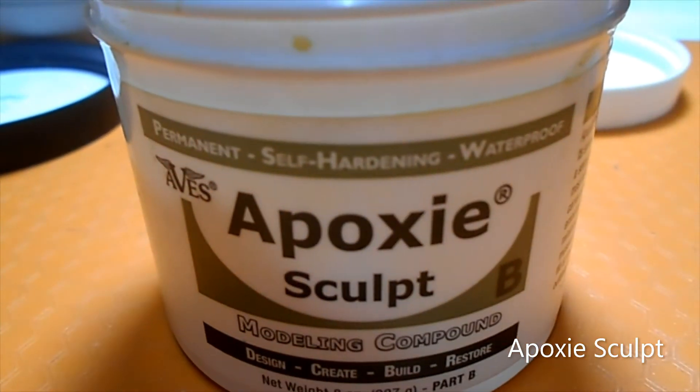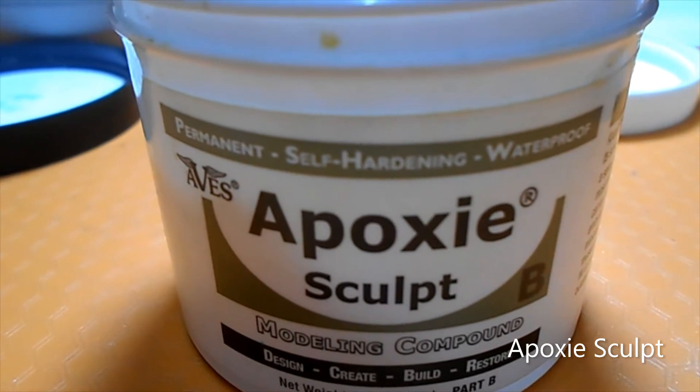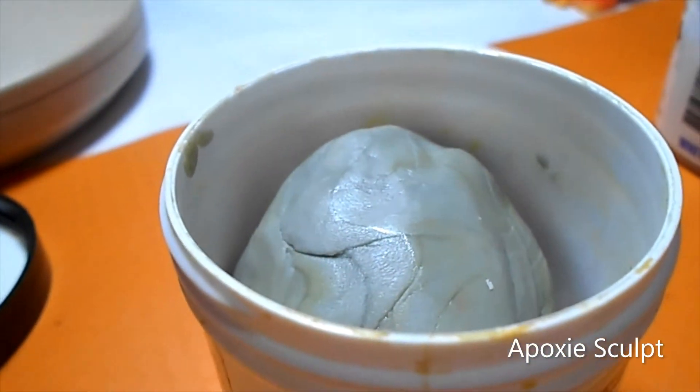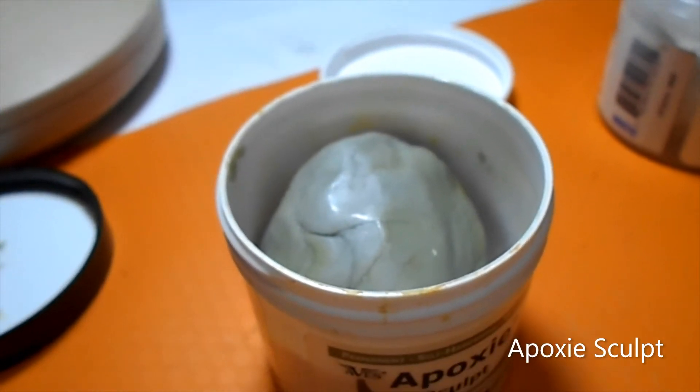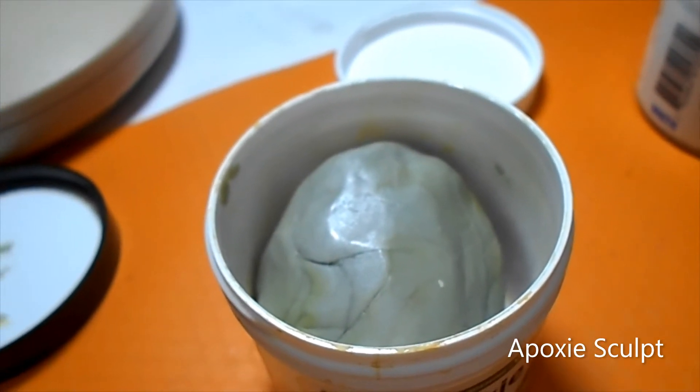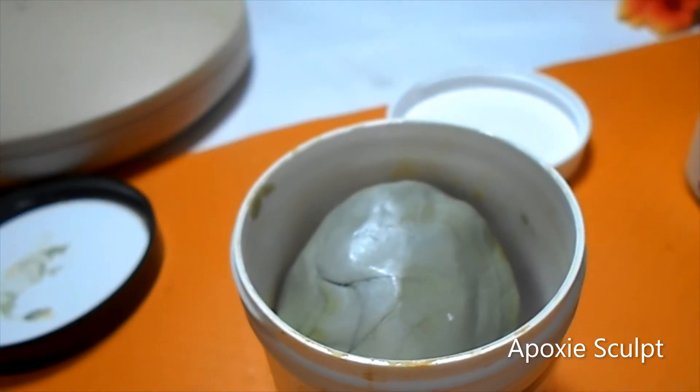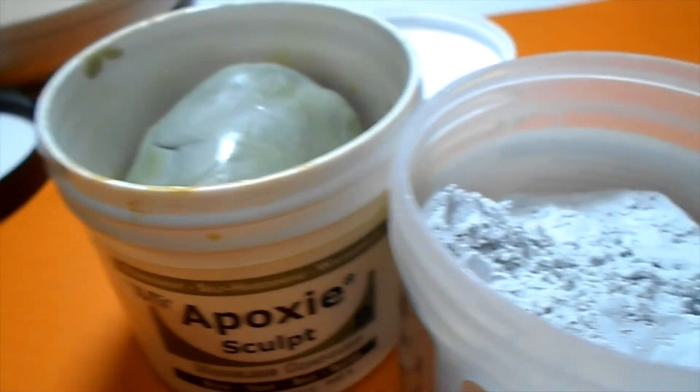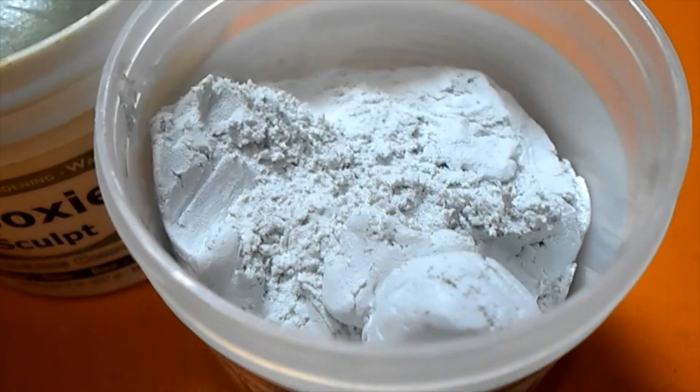So the one you're about to look at is epoxy B, and I don't know if the camera is picking it up, but it's like a dark kind of greenish gray. And this one over here, epoxy A, is the white one.